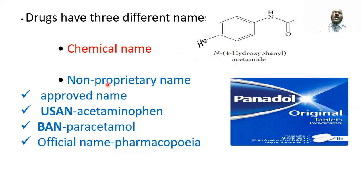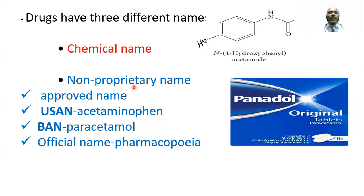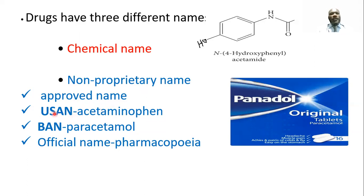We also have the non-proprietary name — a short name assigned to the drug that is not subject to proprietary rights. This name is considered the generic name of the drug. There are two generic names: the approved name and the official name. The approved name is assigned by a council, such as the United States Adopted Names (USAN) and the British Approved Name (BAN), soon after the drug's introduction.